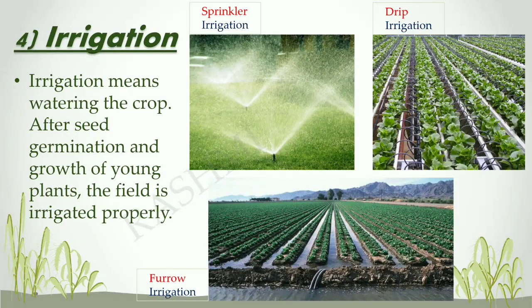The next stage in crop production is irrigation. Irrigation means watering the crop after seed germination and growth of young plants. The field should be irrigated properly. The methods of irrigation generally used are sprinkler irrigation, drip irrigation, furrow irrigation, and surface irrigation.